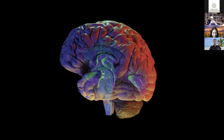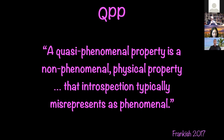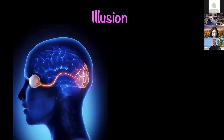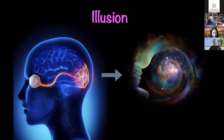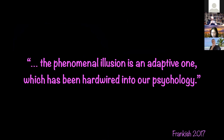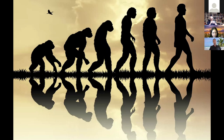A quasi-phenomenal property is a non-phenomenal physical property of the brain that introspection typically misrepresents as phenomenal. So the outputs of sensory processes in the brain are misrepresented by introspection, leading to the illusion of phenomenal experiences. Keith argues that this illusion is a product of natural selection — the phenomenal illusion is an adaptive one which has been hardwired into our psychology.